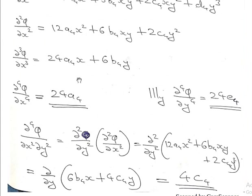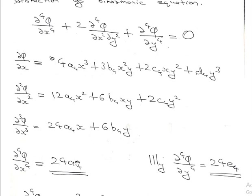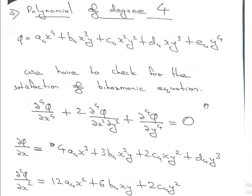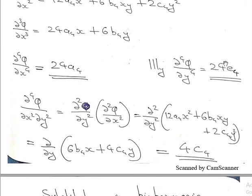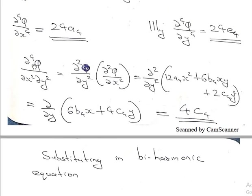If you see a shortcut, d raised to 4 phi by dx raised to 4 is 24. Similarly, e4 is wide. We call y4 is 24. We call x4 is 24 and y4 is 24. We call the term 3: d raised to 4 phi by dx squared dy squared.